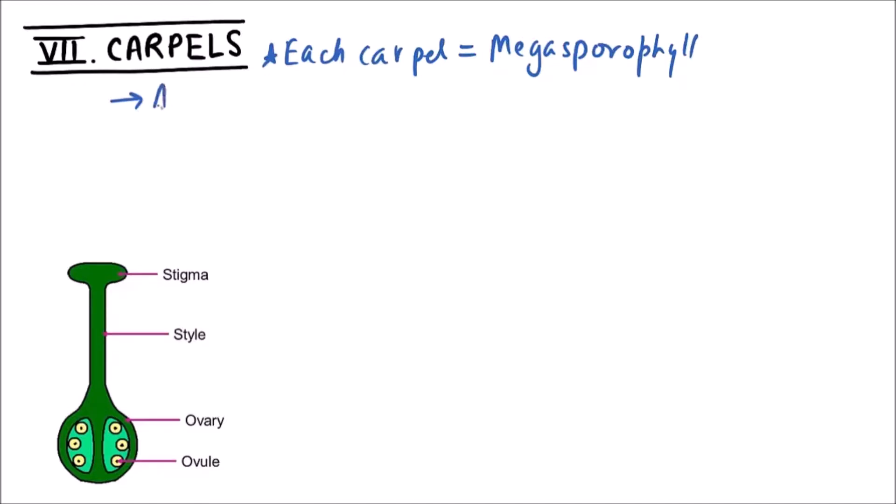All carpels in a flower are collectively termed as Gynetium. A flower may have one or more carpels.